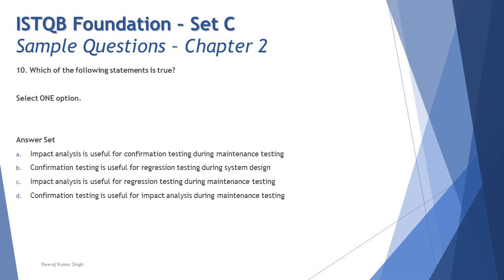Option B: 'Confirmation testing is useful for regression testing during system design.' This is contradictory — confirmation testing checks whether a bug is fixed, while regression testing checks for side effects of a change. They serve different purposes and are not interrelated. Additionally, system design occurs much earlier in the lifecycle, making this statement incorrect.